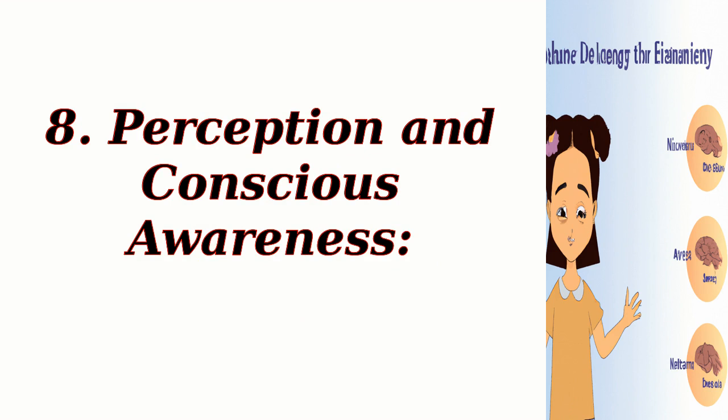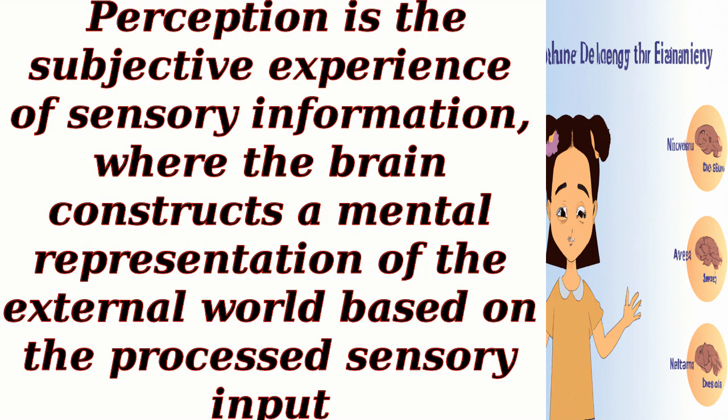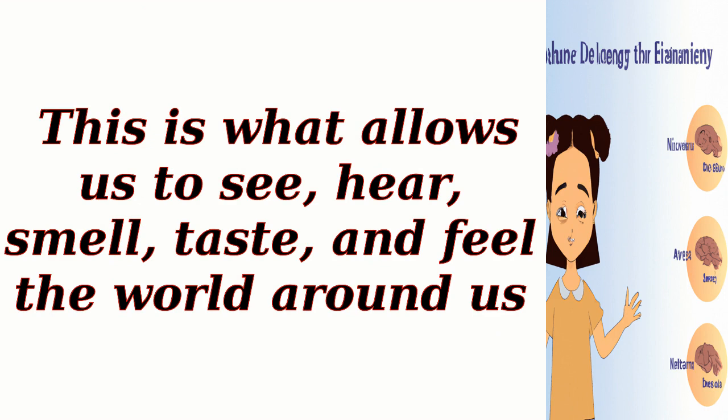8. Perception and Conscious Awareness. The final stage of sensory processing involves the generation of perception and conscious awareness. Perception is the subjective experience of sensory information, where the brain constructs a mental representation of the external world based on the processed sensory input. This is what allows us to see, hear, smell, taste, and feel the world around us.